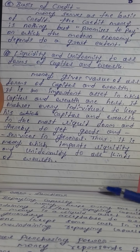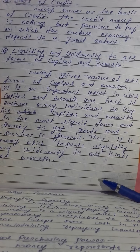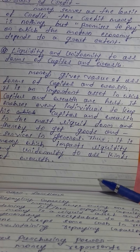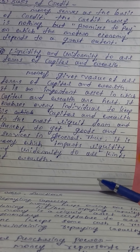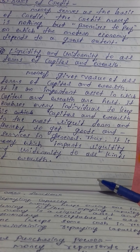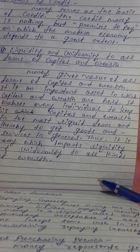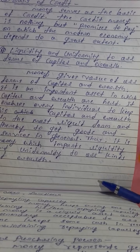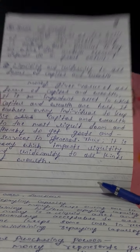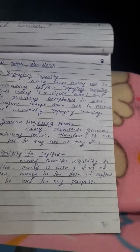Money provides liquidity and uniformity to all forms of capital and wealth. Whatever form your assets may be in, money enables them to be converted uniformly and used for any purpose — this is the significance of liquidity and uniformity to all forms of capital and wealth.